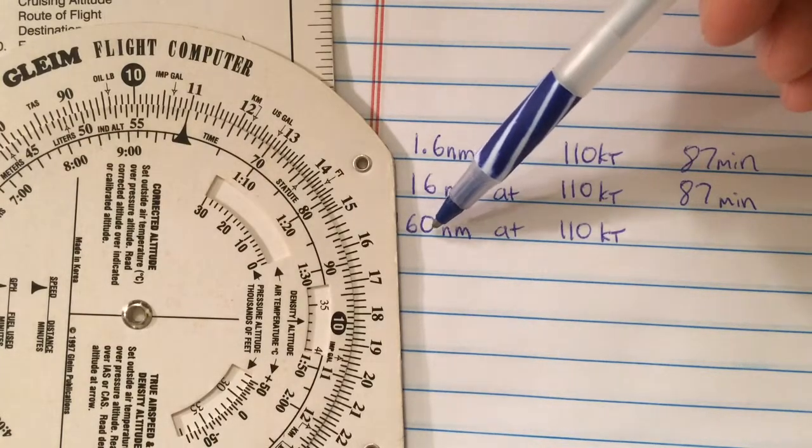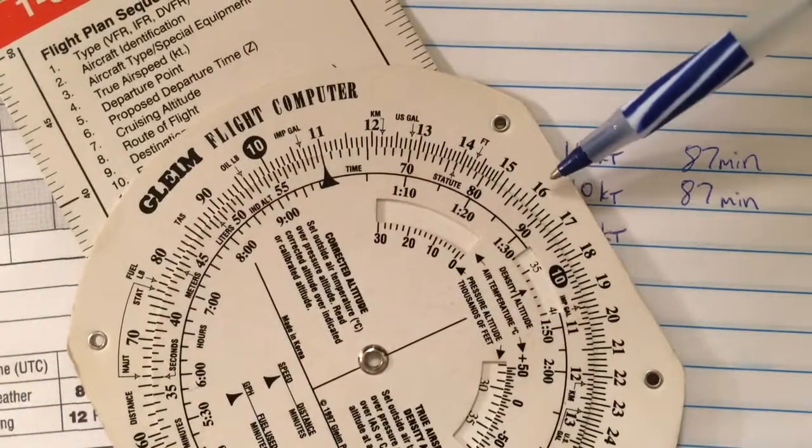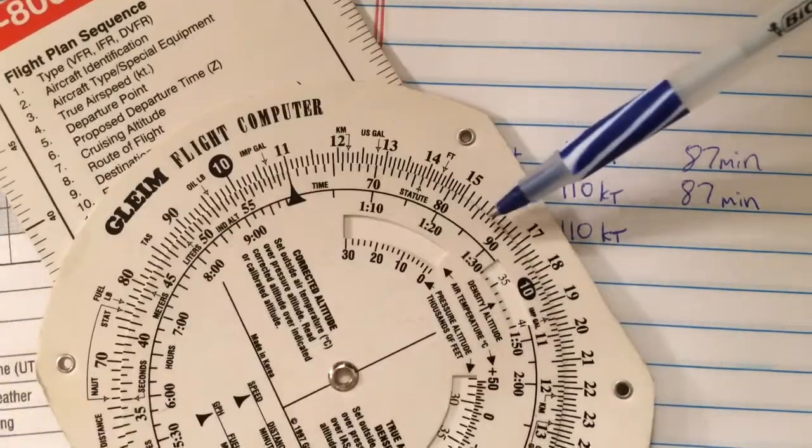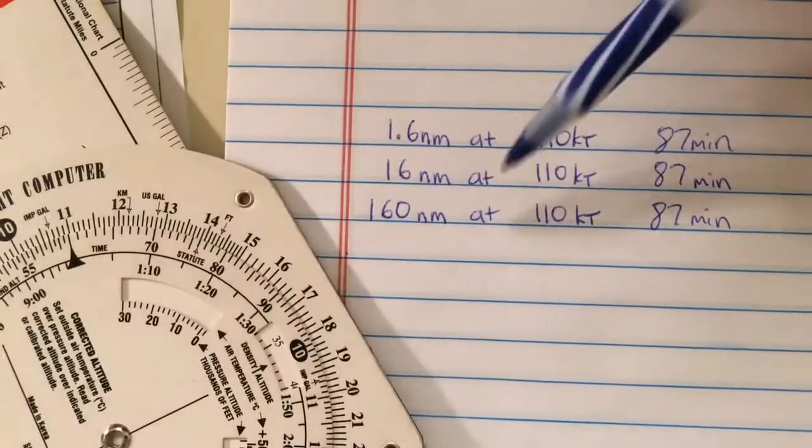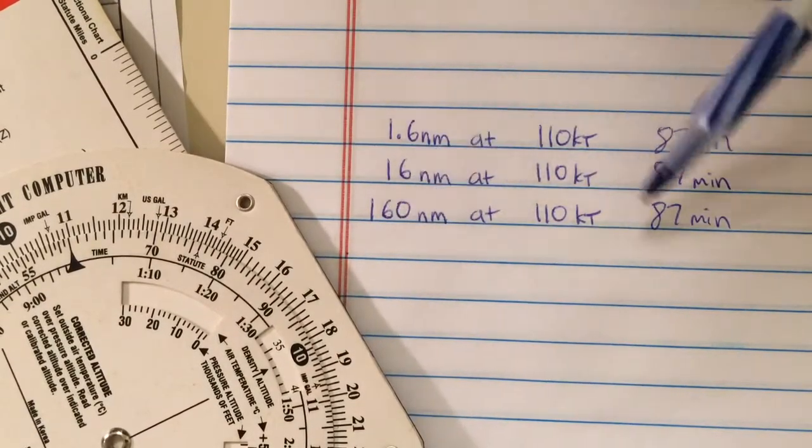Our last one. I can use 160 nautical miles, represented by the 16 on the E6B where we can imply a zero at the end. The number I read off the inner scale is 87. Does this make sense? Would it take me 87 minutes to go 160 nautical miles? Yes.